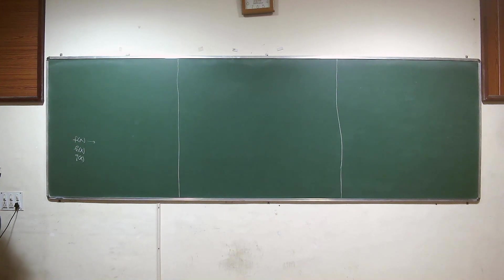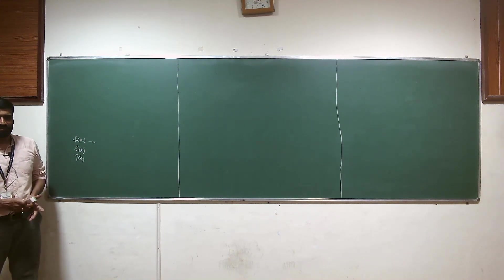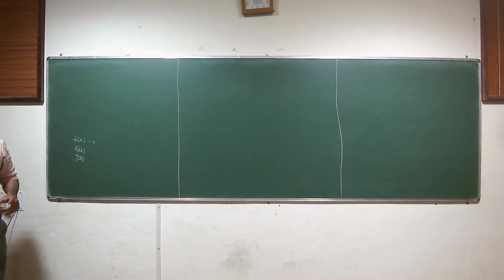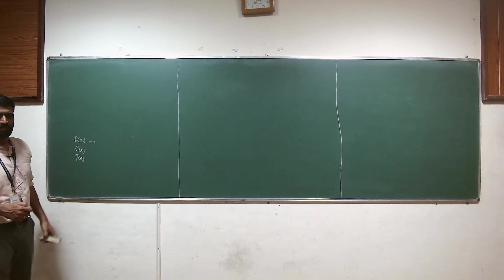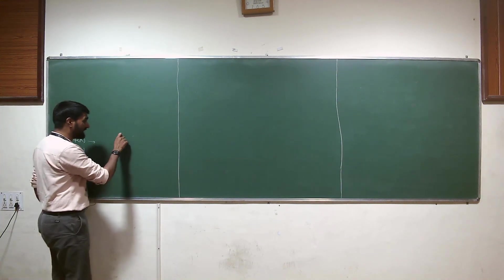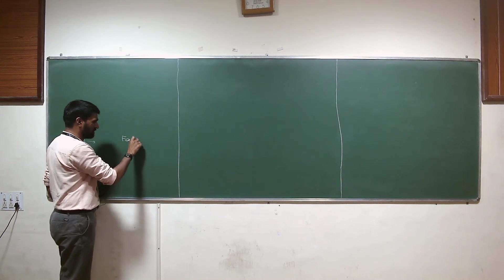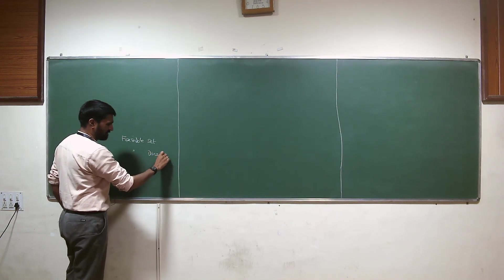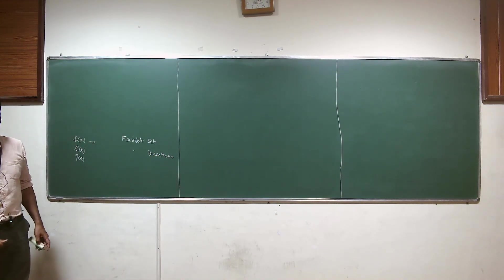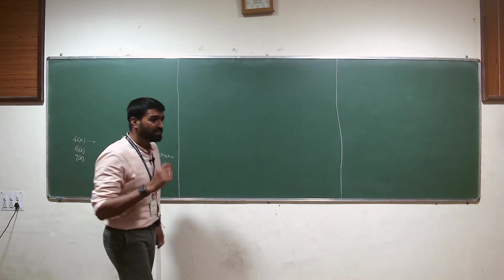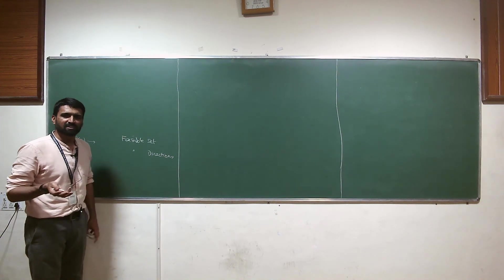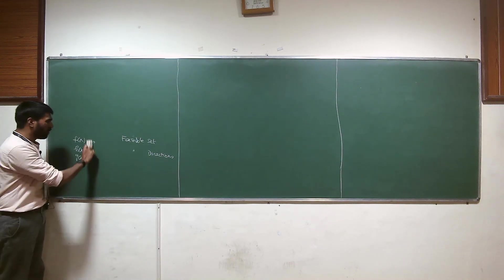Feasible set — this is really fundamental. What is the feasible set? Feasible set and feasible directions are different. What is the feasible set? When somebody says feasible set for an optimization problem like this, what do you understand by it?